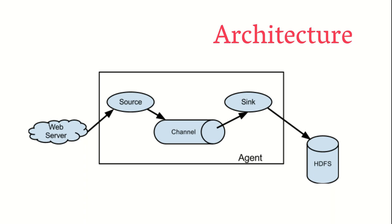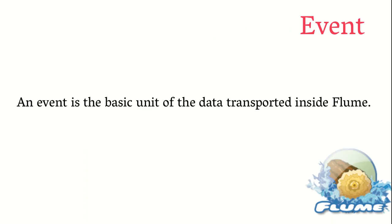Before discussing these three components, there is one key term called event. Why is this word so important? Because it's the basic unit of data transported inside Flume. For example, similar to the OSI model where each layer has its own PDU — like packets in the network layer, bits in the physical layer, and frames in the data link layer — in Apache Flume we have a basic unit of data called an event, similar to PDUs in the OSI model.